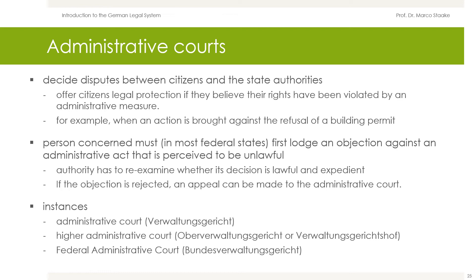In public law, administrative courts are responsible for disputes between citizens and the state authorities. They offer citizens legal protection if they believe their rights have been violated by an administrative measure — for example, when an action is brought against the refusal of a building permit. In most federal states, the person concerned must first lodge an objection against an administrative act that is perceived to be unlawful. In the objection procedure, the authority has to re-examine whether its decision is lawful and expedient. If the objection is rejected, an appeal can be made to the administrative court.